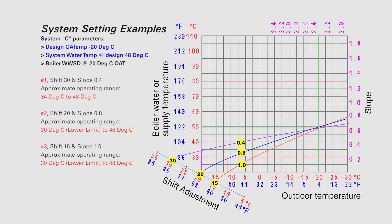System C parameters: the design outdoor air temperature is minus 20 degrees C, and the system water temperature at design is 48 degrees C. In example 1, shift is set at 30 and slope is set at 0.4, giving an approximate operating temperature range between 34 and 48 C. In example 2, shift is set at 20 and slope is set at 0.8, giving an approximate operating range between 30 and 48 C. In example 3, shift is set at 15 and slope is set at 1.0, giving an approximate operating range between 30 and 48 C. Note that under examples 2 and 3, the minimum boiler water set point is held until a colder outdoor air temperature.